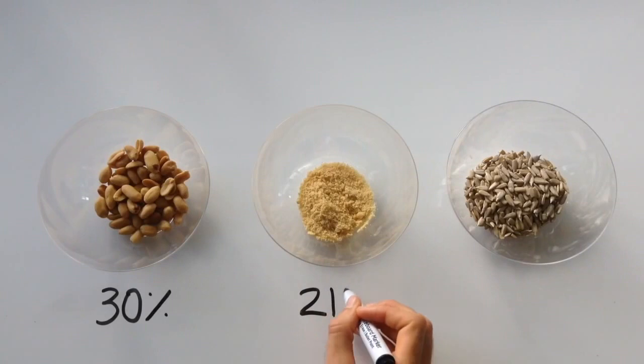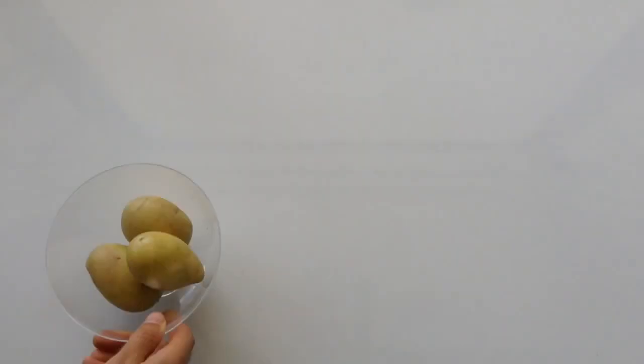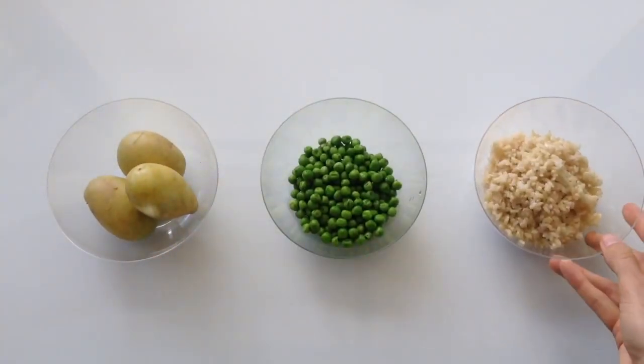A tablespoon of nutritional yeast has 21%, and a quarter cup of sunflower seeds having 18%. Three small potatoes, a cup of green peas and brown rice all equate to 14% of your daily value.